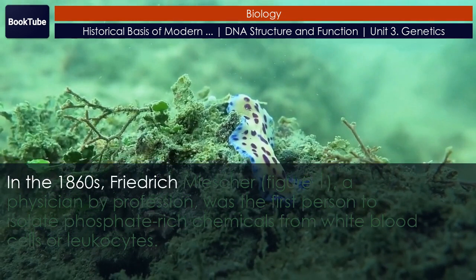A half-century later, British bacteriologist Frederick Griffith was perhaps the first person to show that hereditary information could be transferred from one cell to another horizontally, rather than by descent. In 1928, he reported the first demonstration of bacterial transformation, a process in which external DNA is taken up by a cell, thereby changing morphology and physiology. He was working with Streptococcus pneumoniae, the bacterium that causes pneumonia.